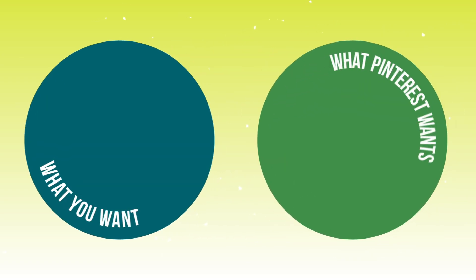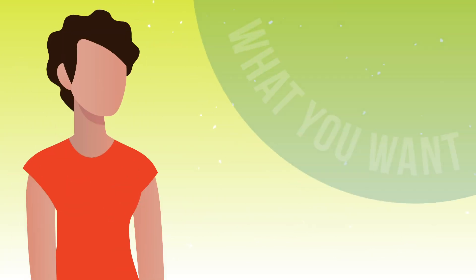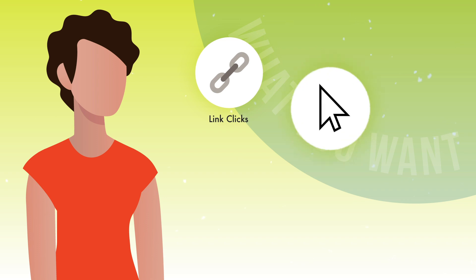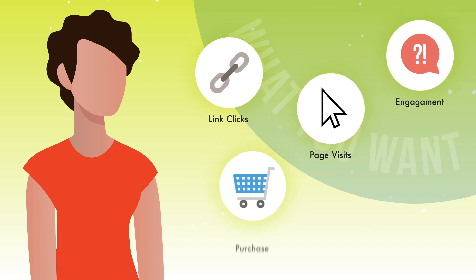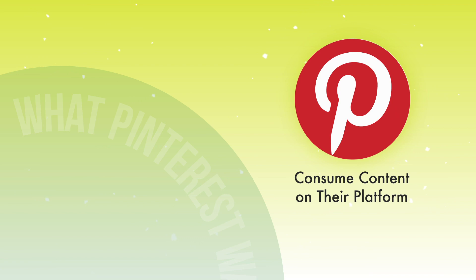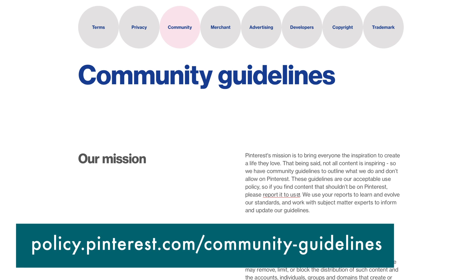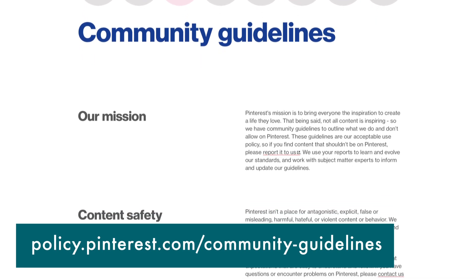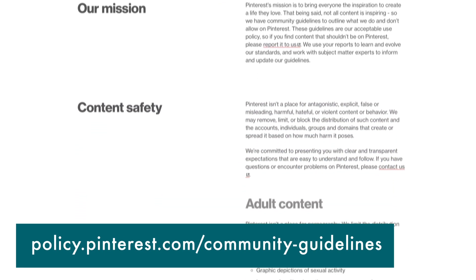Another thing to ask yourself is: where does what I want overlap with what Pinterest wants? We generally want link clicks — we want people to come to our site, engage with our content, purchase our products, sign up on our list. Pinterest wants people to consume content on the platform. So how do you find out what Pinterest wants? Reference the most recent guidance. Pinterest has lots of channels of communication with us — check out Pinterest communications, its help section, its newsletters, and get insight into what they want us to be doing right now on the platform.